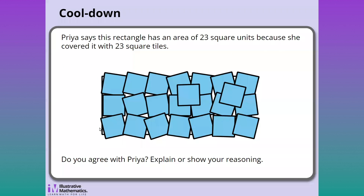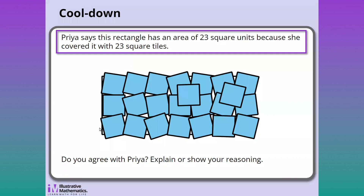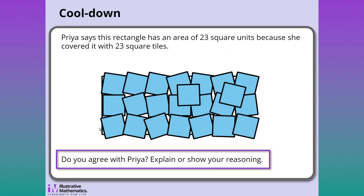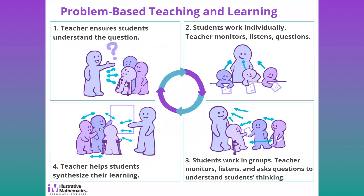In this cool-down, Priya is explaining that a rectangle has an area of 23 square units, and students need to explain why they either agree or disagree with Priya.